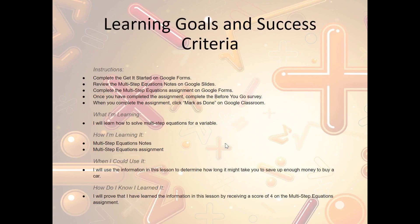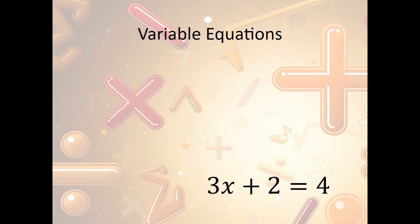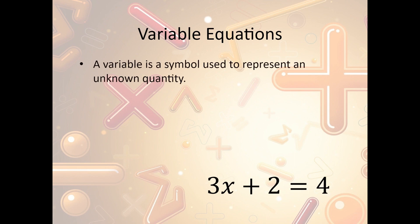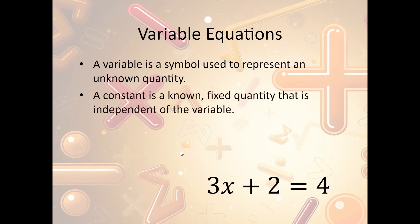Our notes begin with the learning goals and success criteria. Now, what are variable equations? A variable is a symbol used to represent an unknown quantity. In this case, it is the x — it's the unknown, it's some letter usually. A constant is a known fixed quantity that is independent of the variable, so it's a value that we do know. For instance, 2 would be a constant.